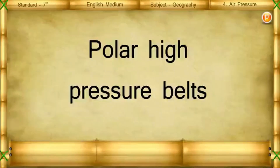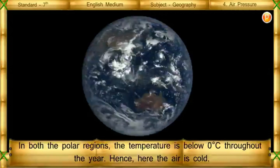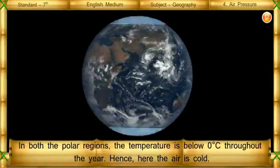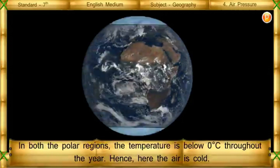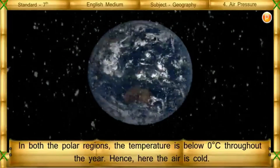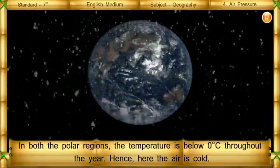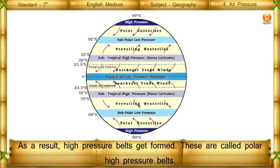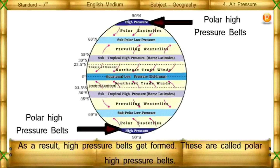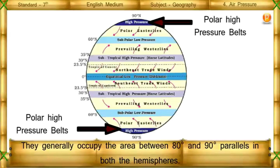Polar high pressure belts: In both the polar regions, the temperature is below 0 degrees throughout the year. Hence, the air is cooled, and as a result, high pressure belts get formed. These are called polar high pressure belts. They generally occupy the area between 80 degrees and 90 degrees parallels in both hemispheres.